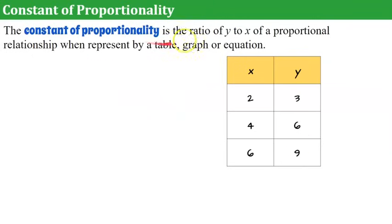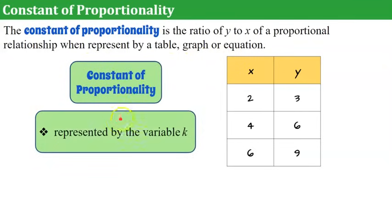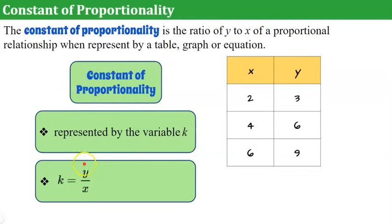The constant of proportionality is a ratio of y to x of a proportional relationship, and it can be represented by a table, a graph, or an equation. In this video we're going to focus on tables and graphs; in the next video we'll talk about equations. The constant of proportionality is represented by the variable k, and k equals the ratio y over x.